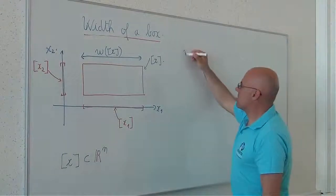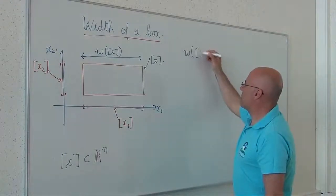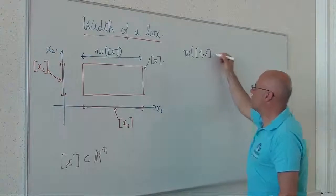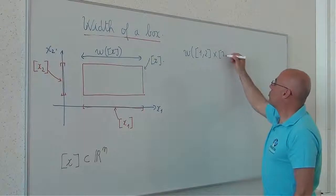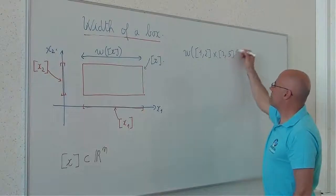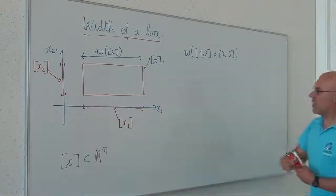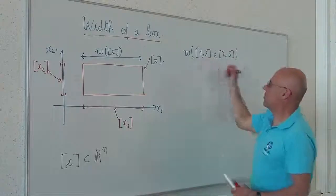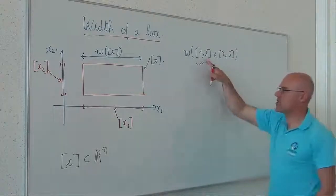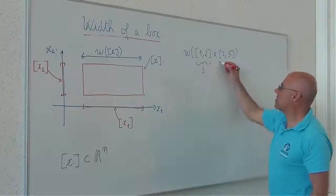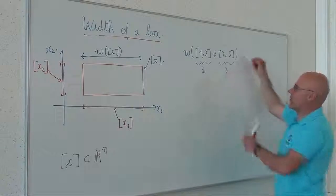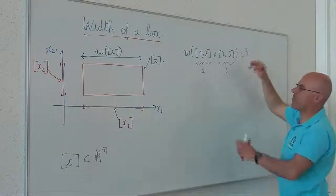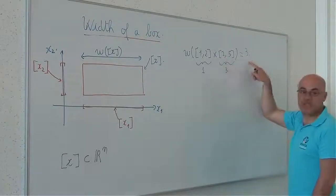Consider, for instance, the width of the box X2. This is the Cartesian product X5. This box has two interval components. The width of this one is 1. The width of this interval is 3. The largest one is 3. That's 3.